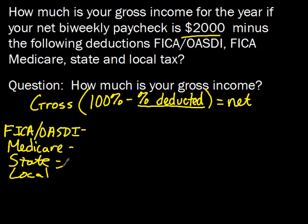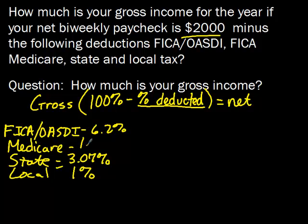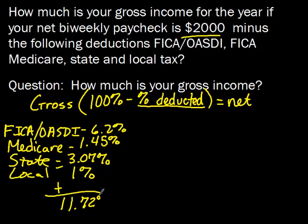From our earlier work, the PA state tax is 3.07% and local is 1%. The other two deductions we haven't looked at in this video: FICA OASDI is 6.2% and FICA Medicare is 1.45%. We add all these percentages up and get a total being deducted of 11.72%.